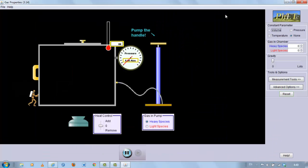This is what you will see when you open the simulation on gas properties. There is a pump to pump in molecules of gas, a pressure gauge which measures pressure in atmospheres, a thermometer, and a device to provide ice for cooling or flame for heating.